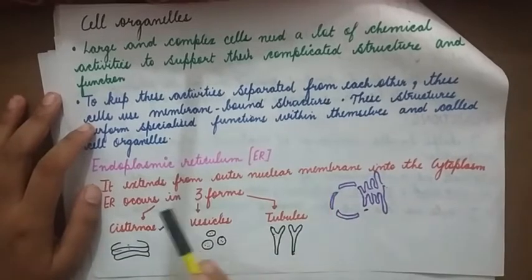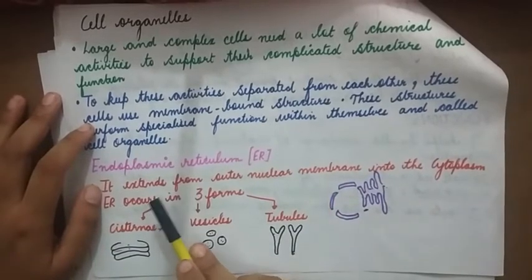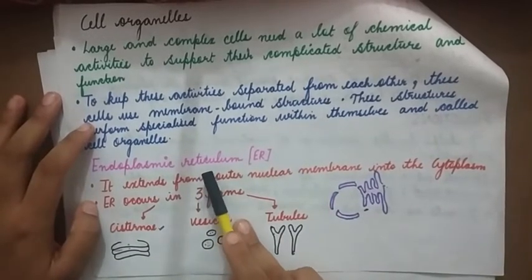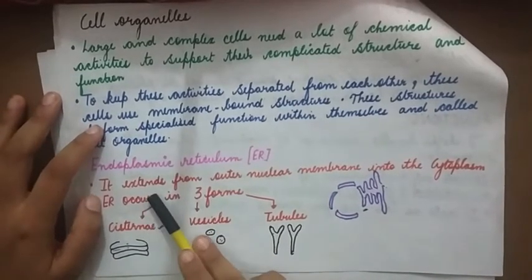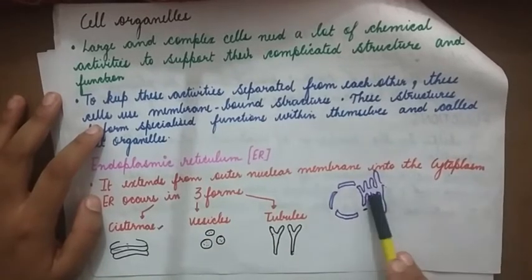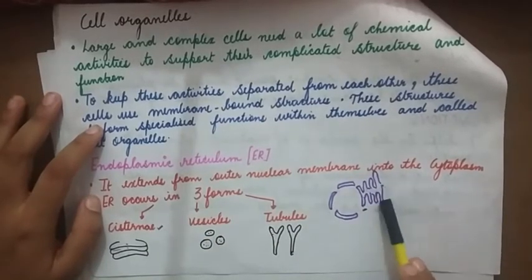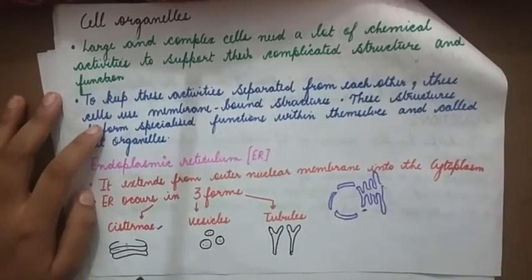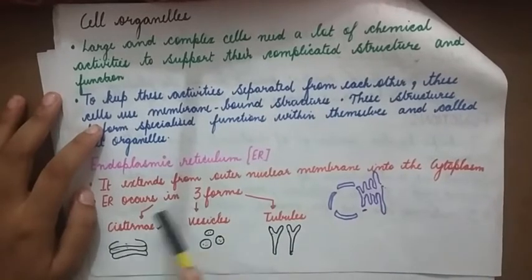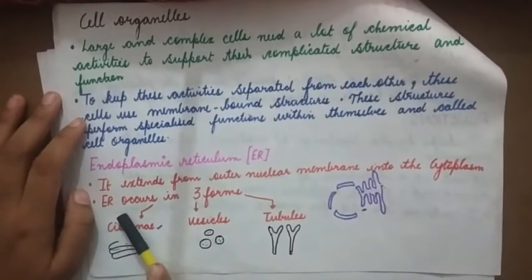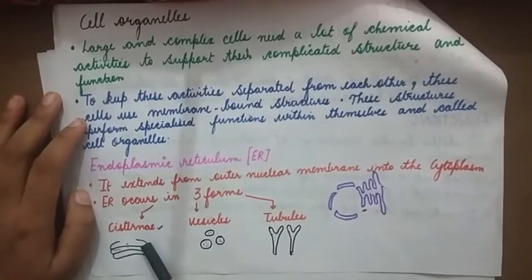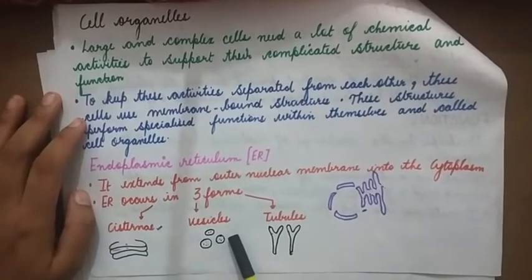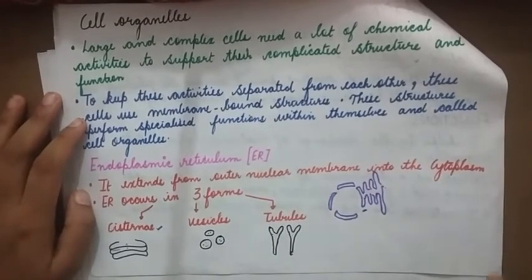Endoplasmic reticulum is a membrane-bound organelle. It extends from the outer nuclear membrane into the cytoplasm. Endoplasmic reticulum can also be written as ER, and it occurs in three forms: cisternae, vesicles, and tubules.